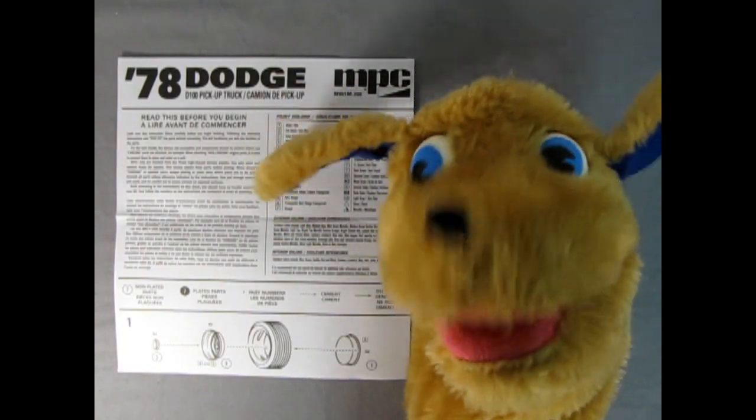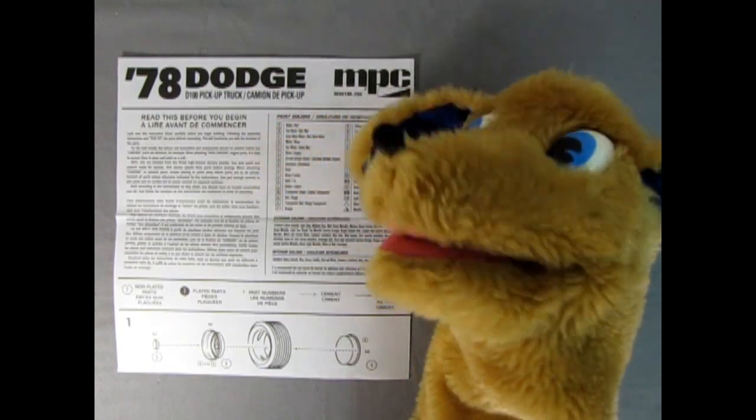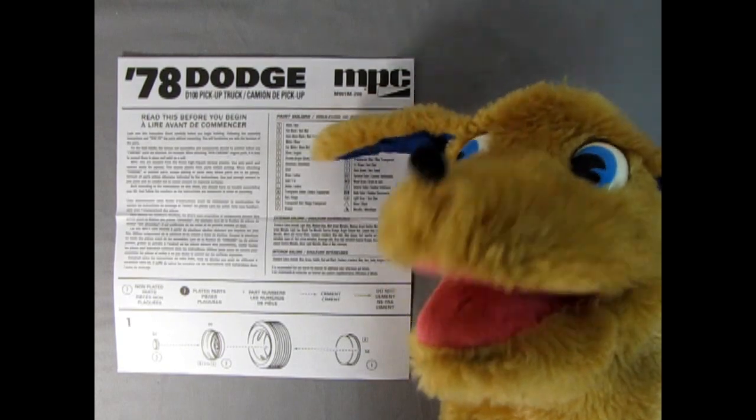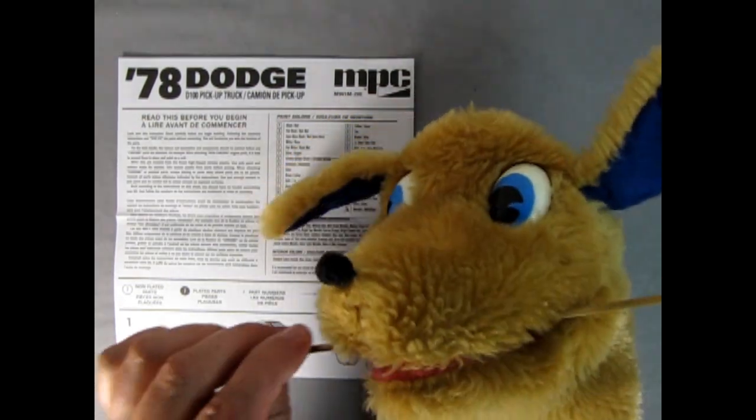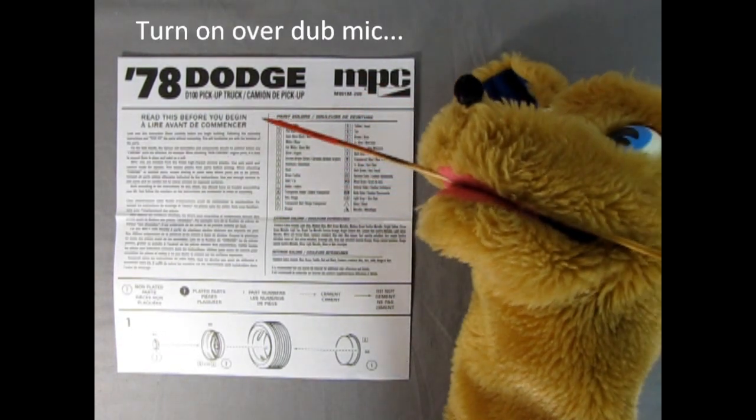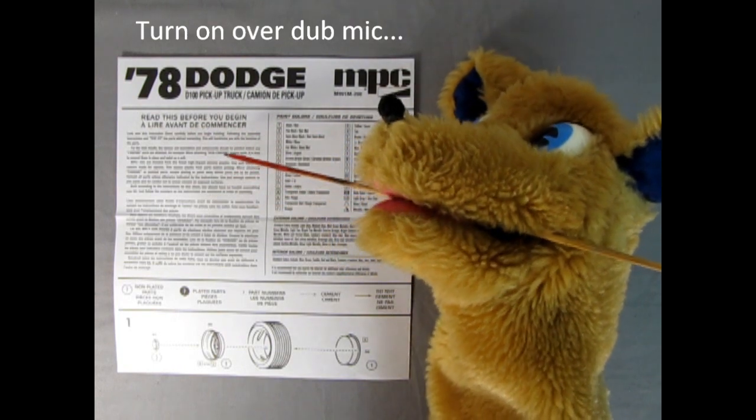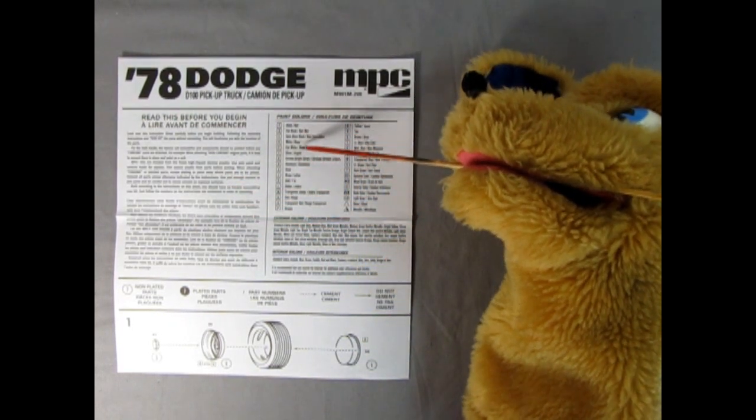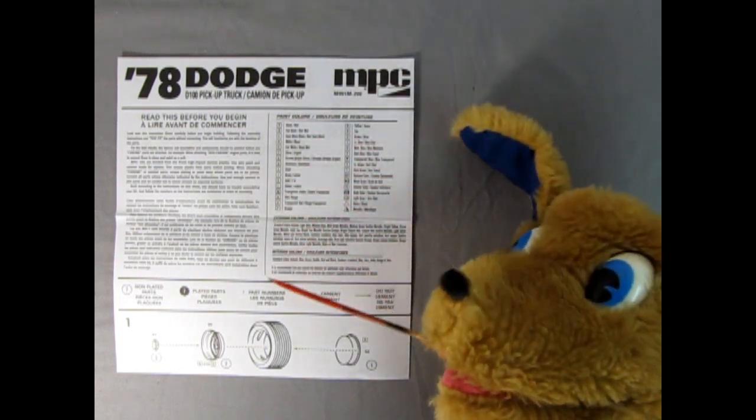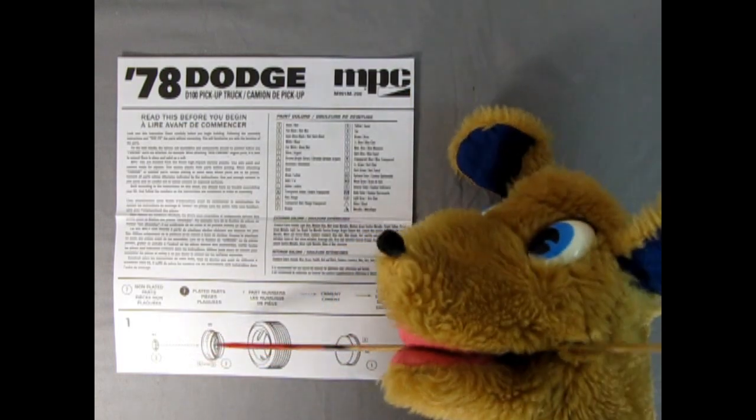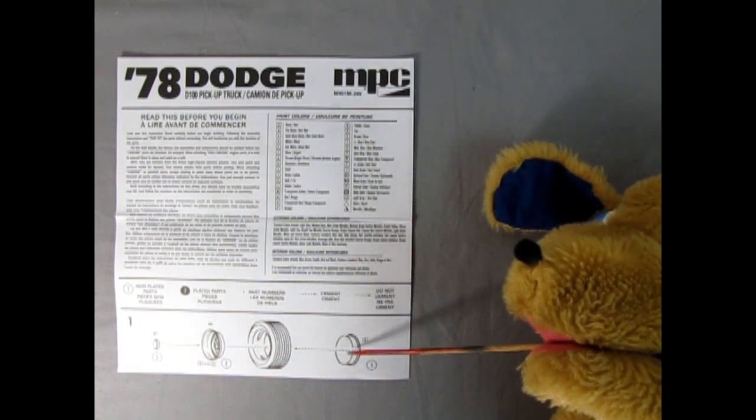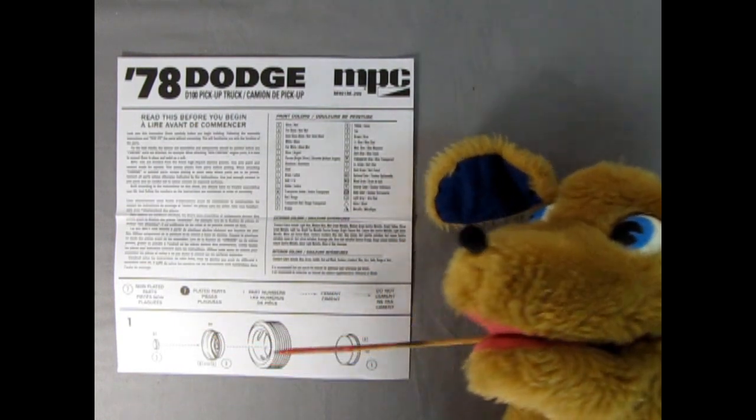Now let's throw the instructions to the dog. Here we got the instruction sheet for our 1978 Dodge D100 pickup truck by MPC. I'll use that overhead mic and grab this stick. It says read before you begin. If you've seen that video that Trevor did, it's really good all about reading the instructions. Here's the paint color chart going down right there. There's a lot of paint in this. In panel one we got our wheels going together with the dog dish hubcap, wheel, tire, and wheel back all sandwiched together giving you your completed wheel assembly.